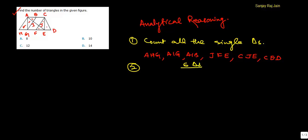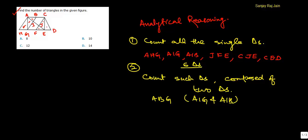So the second step would be, you count those triangles which are composed of 2 triangles. For example, if you notice triangle A, B, G, it consists of A, I, G and A, I, B. Similarly, C, F, E is one such triangle. A, C, J is one such triangle. E, G, I is one such triangle. And that's it. 1, 2, 3, 4. So we have total 4 triangles which are composed of exactly 2 triangles.